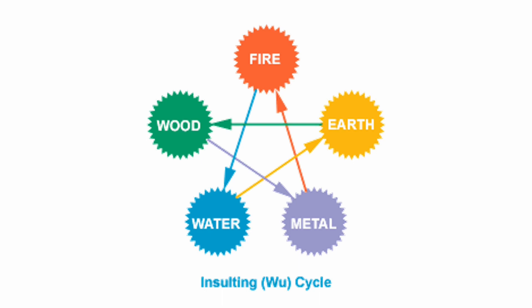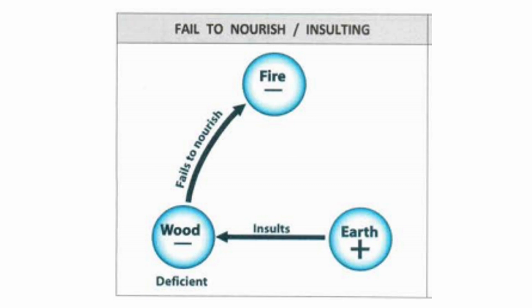In the insulting cycle, the element which is normally controlled harms the controller. This reversal of the normal Ko cycle can happen when the grandparent element is deficient. Too much wood insults metal; too much metal insults fire; too much fire insults water; too much water insults earth; too much earth insults wood.